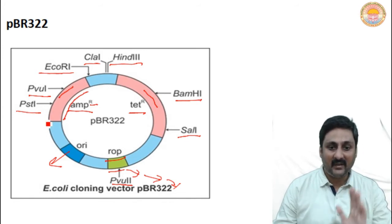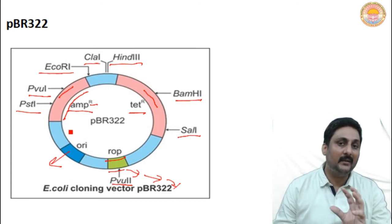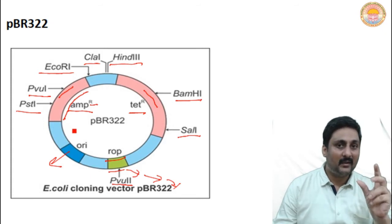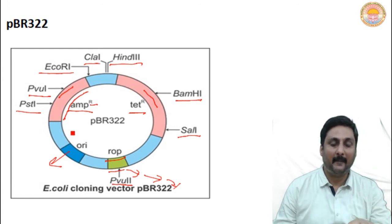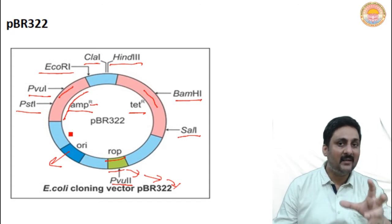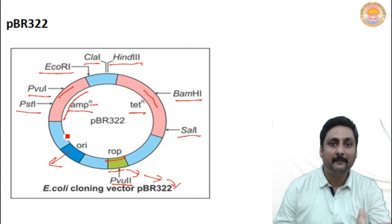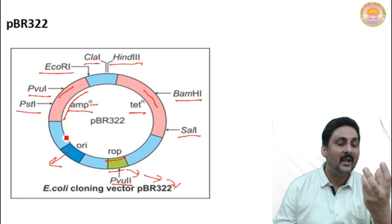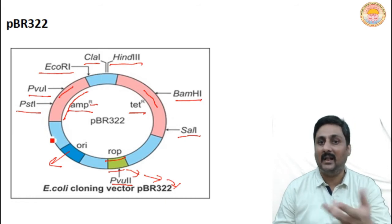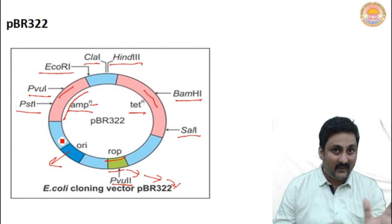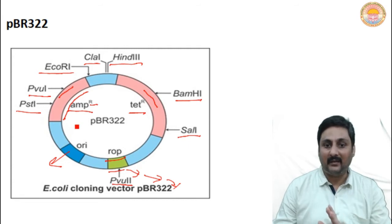For cloning purposes, consider the tetracycline resistant gene in this vector. We insert a desired DNA sequence inside the vector, and then the vector along with the desired DNA is allowed to go inside the host organism — the host organism can be a prokaryote like bacteria. Now, how will we know that our vector along with the desired DNA has gone inside the host organism, since it is so small it cannot be seen? For that, we use selectable markers.